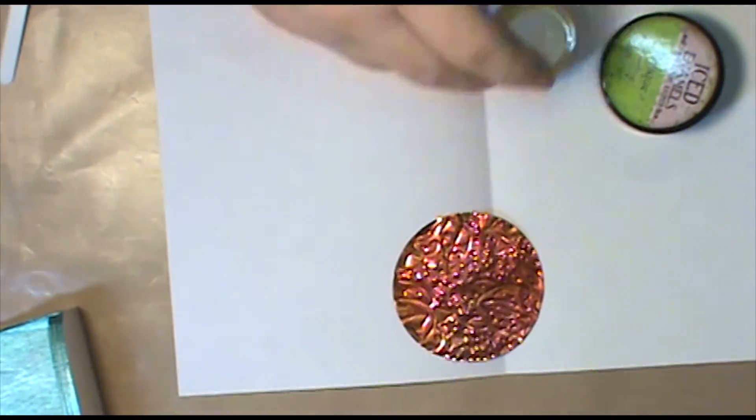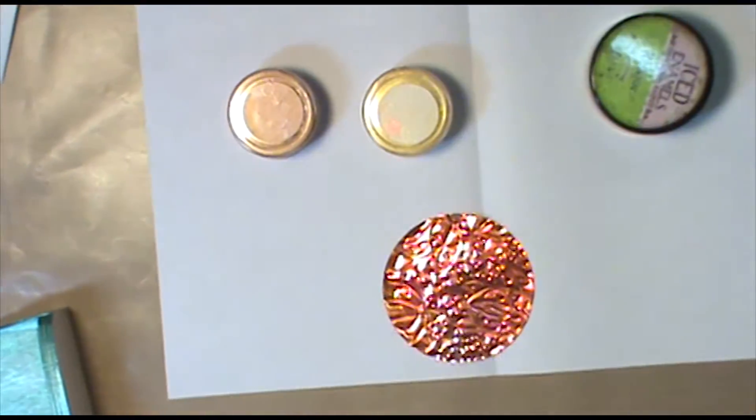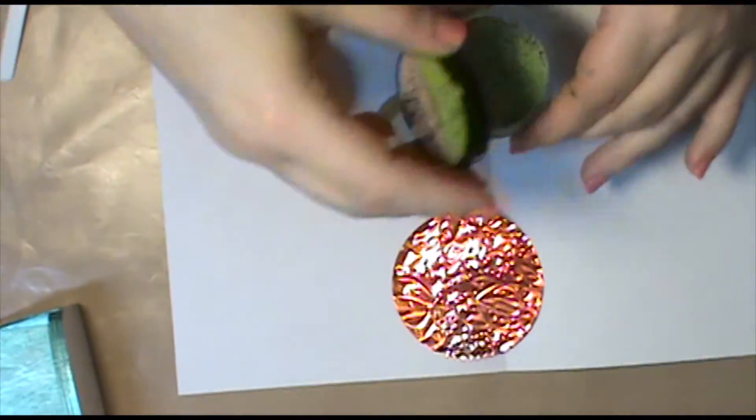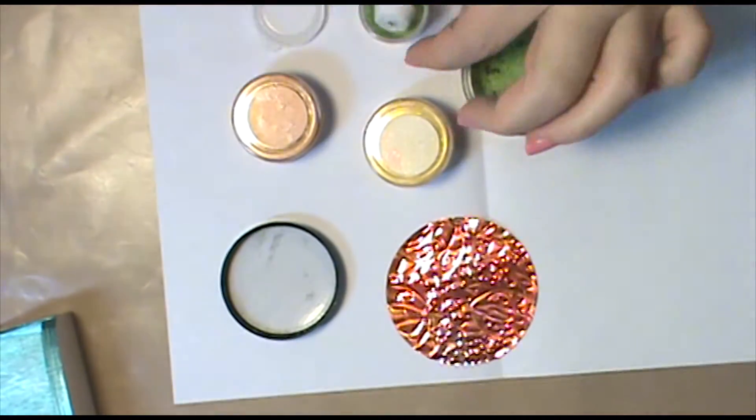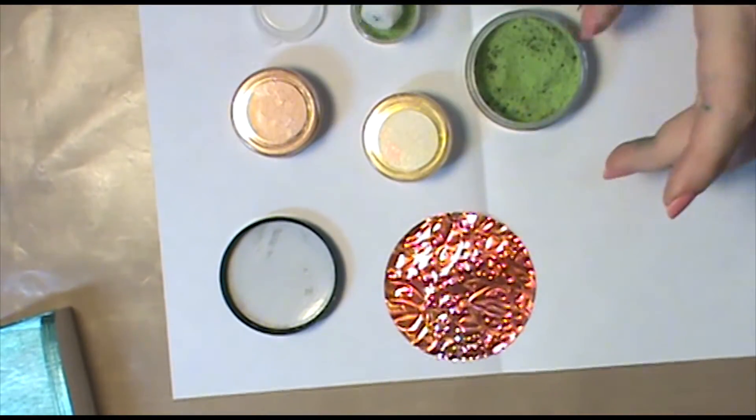This is the finished image after the dry embossing and debossing. But wait, there's more! Yes, for a final embellishment to the metal, if you really want to go all out, you can add the Iced Enamels Relique powders to add a pop of color and extra dimension to your beautiful copper design.